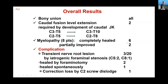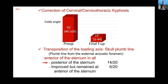This is the overall result — I like this very simple summary. All patients achieved bone union, and two patients required extension of fusion level down to the mid or lower thoracic spine. Eight patients had preoperative myelopathy; this completely healed in six patients and two patients partially improved. We had neurological complications: three patients had a transient nerve root lesion — C5 nerve root lesion in two patients and C8 nerve root in one — and these nerve root complications healed in two patients while one patient healed spontaneously.